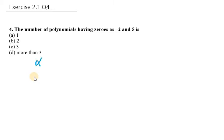In this case we are given with alpha that is -2 and beta as 5. So we know the quadratic polynomial is of the form x² - (sum)x + product.